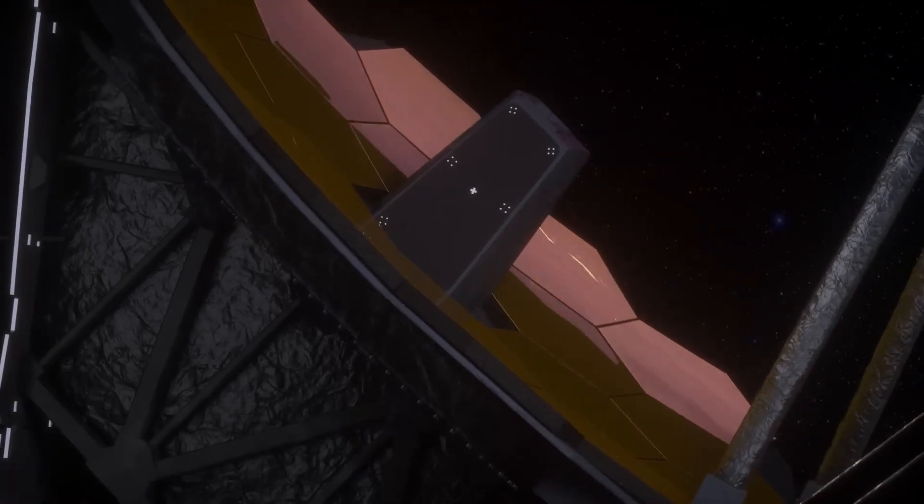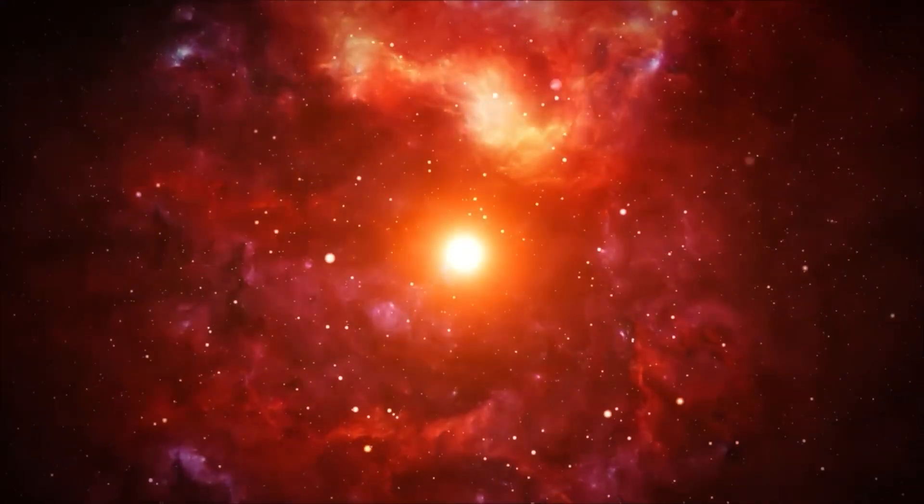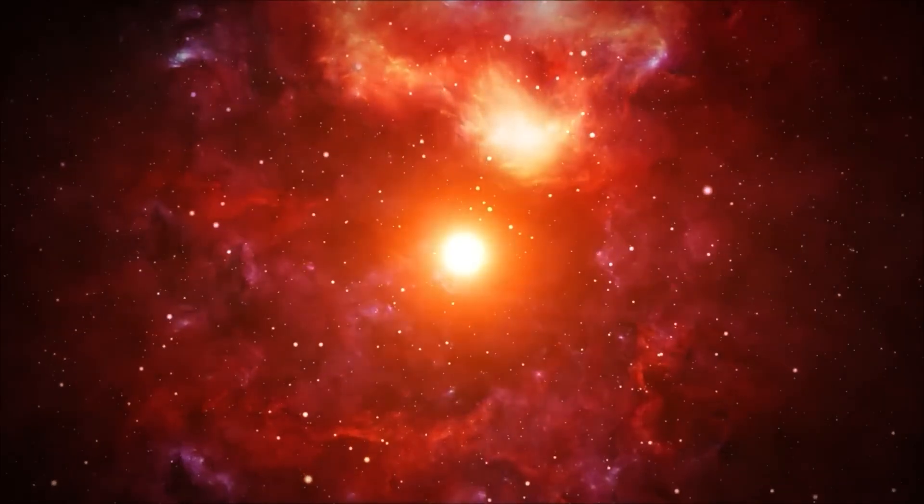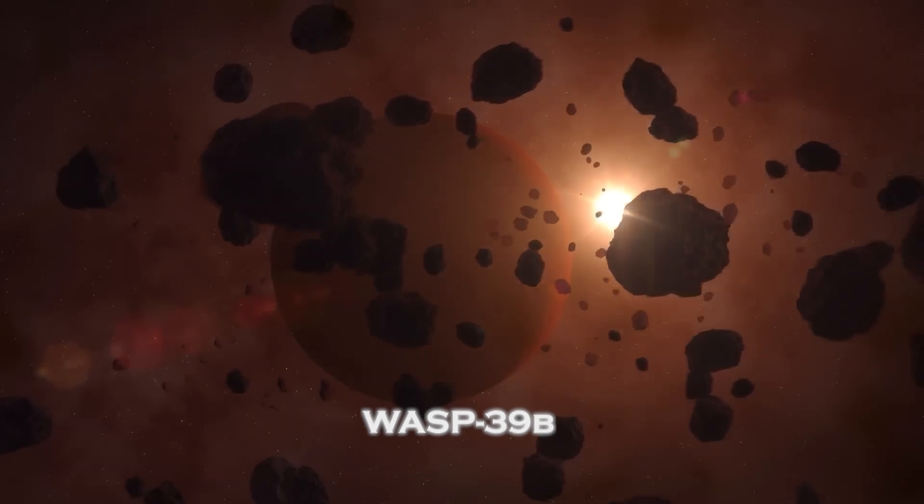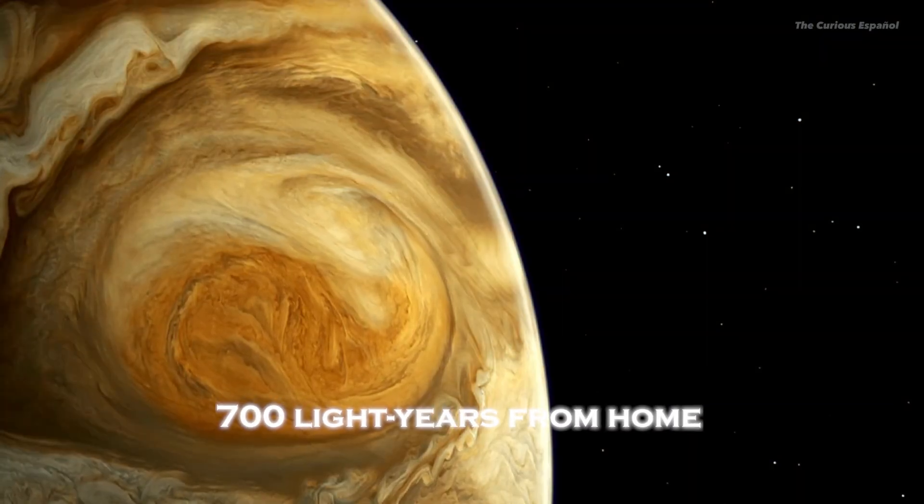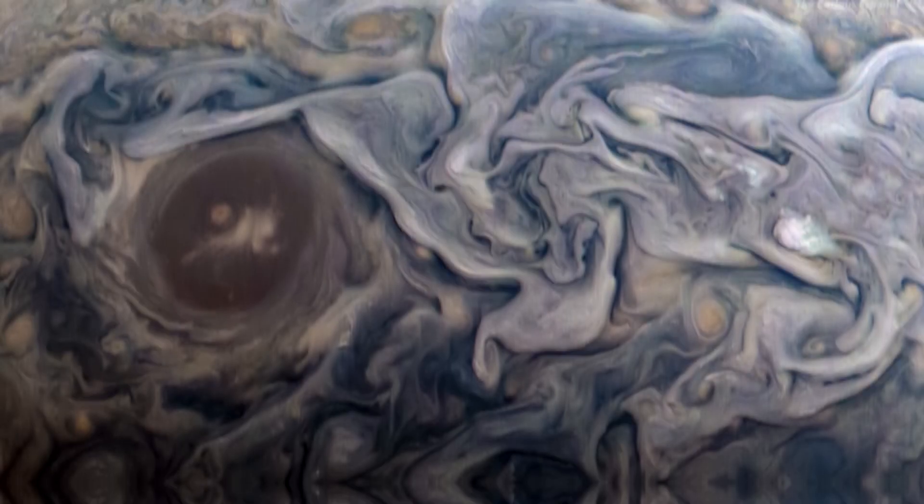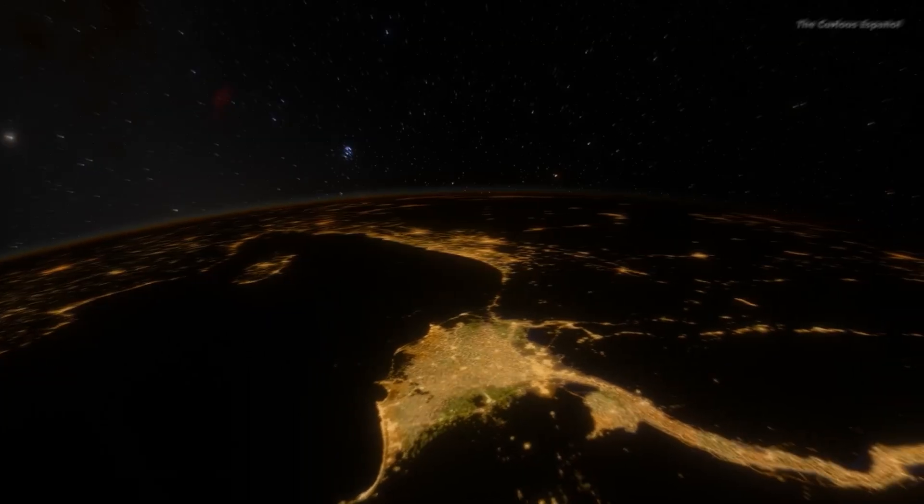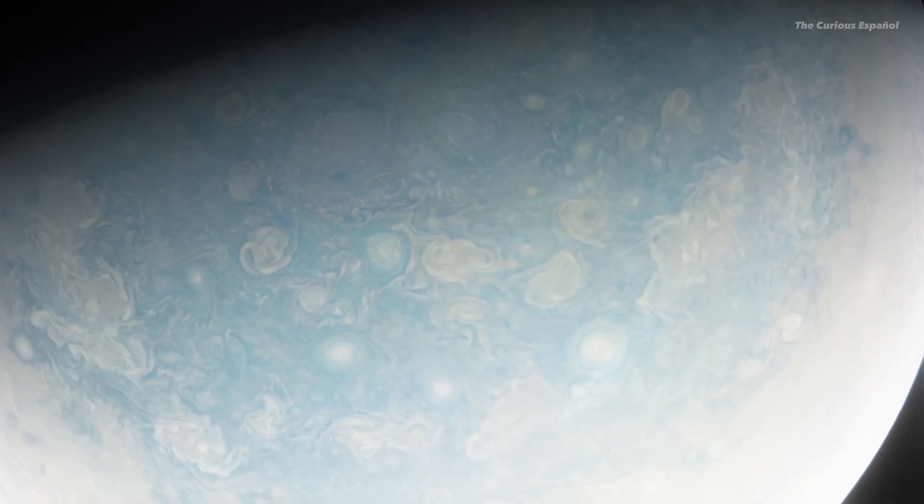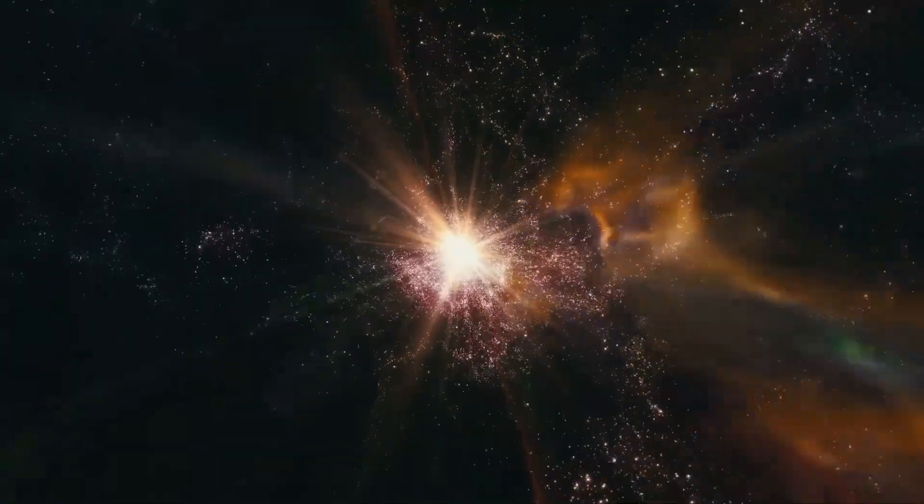Meanwhile, the Webb telescope has studied a planet orbiting a star in the constellation Virgo, conducting one of the most extensive investigations of extrasolar planets. The planet's name is WASP-39b, and it is located 700 light years from home. About eight times closer to its star than Mercury is to the Sun, this Saturn-sized gas giant boils as it orbits its star.